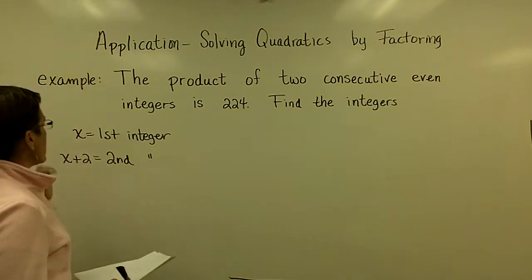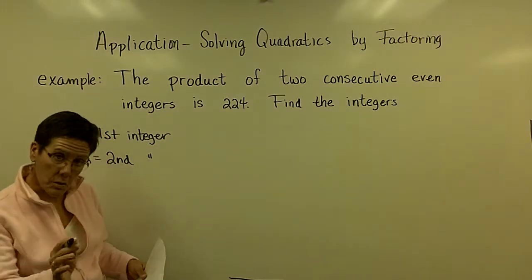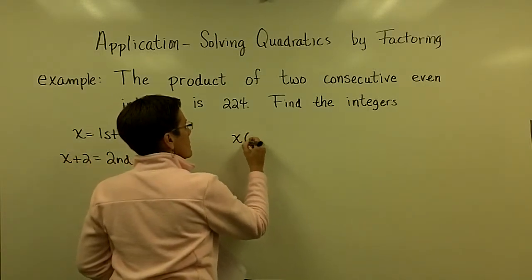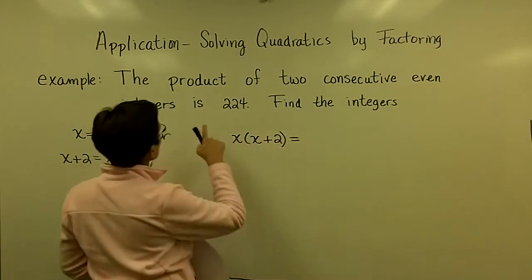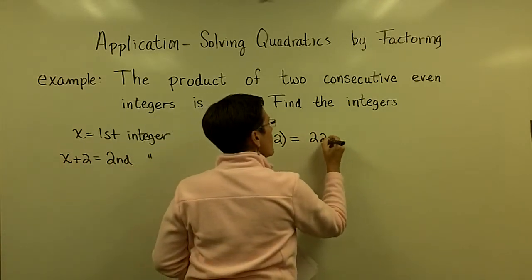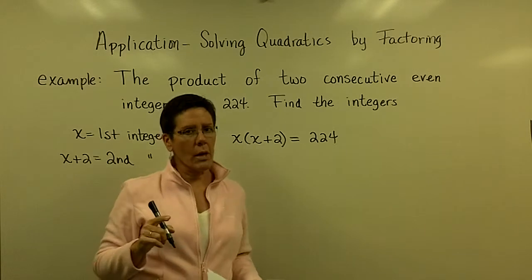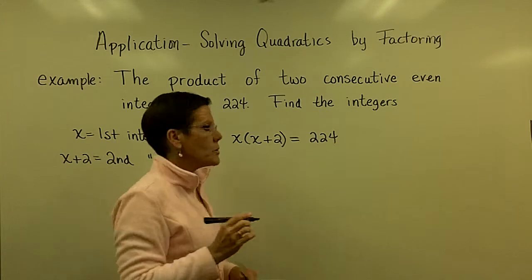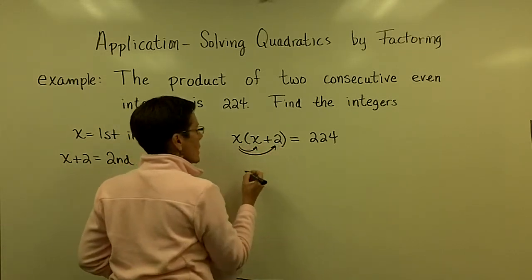Let's see. The product of two consecutive even integers, product means to multiply. So, x times that x plus 2 is, it says the product is, or equals, 224. And I want to solve this by factoring. You know, there is this thing called the quadratic formula that solves quadratic equations, but my focus here is on solution by factoring. But we will at some point do that as well.